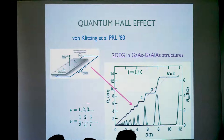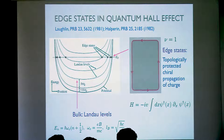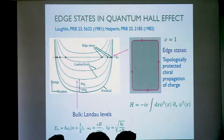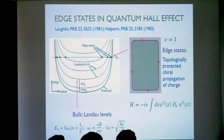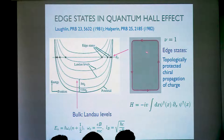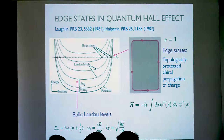There, the so-called quantum Hall regime is achieved, characterized by plateaus in the resistance as a function of the magnetic field. These plateaus occur at particular so-called filling factors — integer numbers, or certain special fractions. The existence of these plateaus is closely related to the fact that the two-dimensional electron gas has Landau levels. What is important for our purposes is that in addition to these bulk Landau levels, the system has the so-called edge states, which are precisely a consequence of the topological nature of the quantum Hall effect.